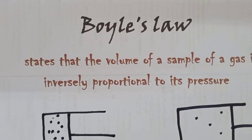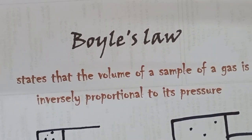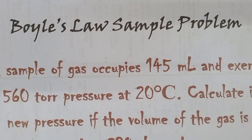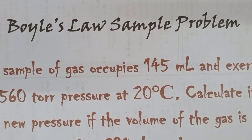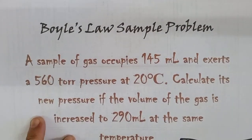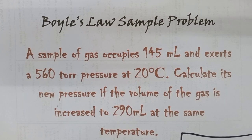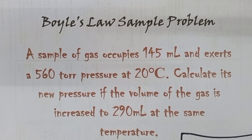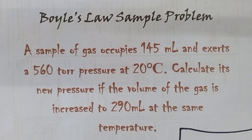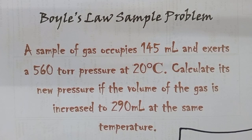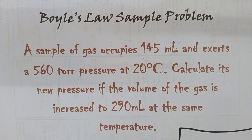Let us have one simple problem to really understand Boyle's Law. The problem is this: a sample of gas occupies 145 ml and exerts a 560 torr pressure at 20 degrees Celsius. Calculate its new pressure if the volume of the gas is increased to 290 ml at the same temperature.